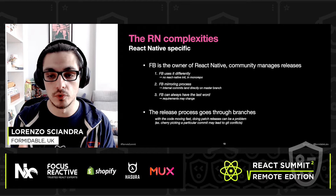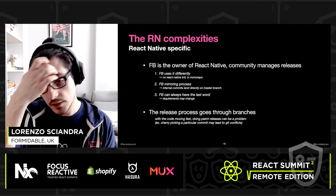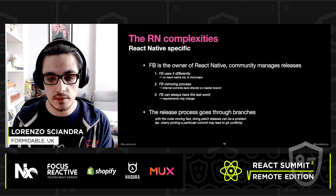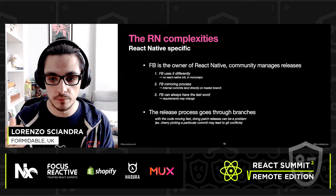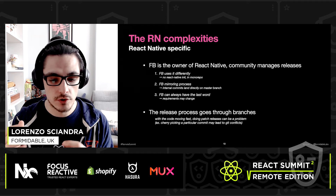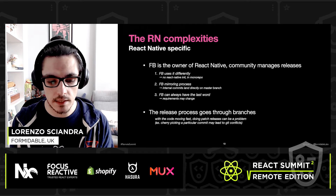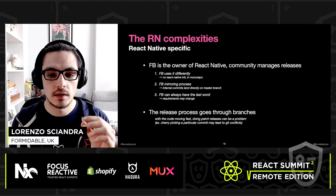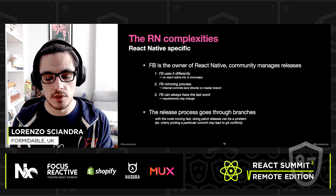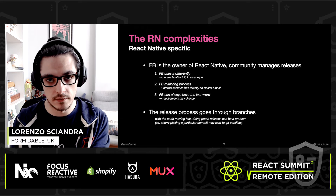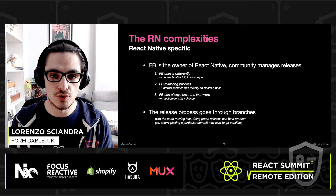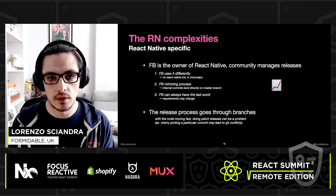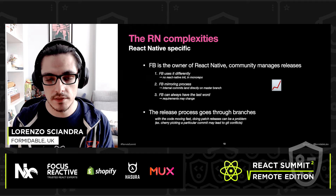Also, because the codebase moves fast and the release process goes through branches — we do a separate branch per stable release — it's sometimes hard to do patch releases. For example, for 62.1, if we wanted to cherry-pick a commit that landed two months after we cut the branch, cherry-picking it may lead to conflicts, which introduces additional complexity.